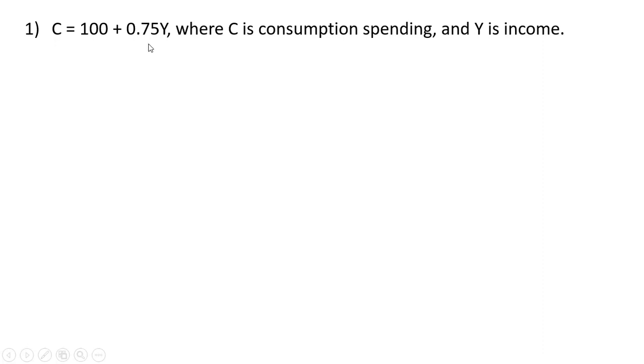C equals 100 plus 0.75Y. C is consumption spending. Y is real GDP or real income. The 0.75 is the marginal propensity to consume. 100 is the vertical intercept. If Y is 0, C equals 100, the vertical intercept.